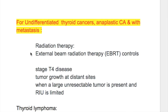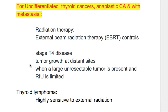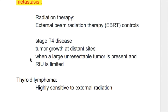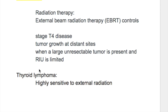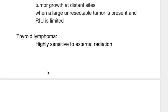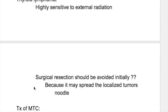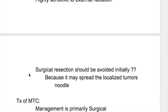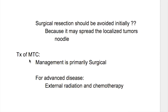For undifferentiated thyroid cancers, anaplastic cancers, and those with metastasis, external beam radiation therapy (EBRT) is used for stage 4 disease, tumor growth with distant metastasis, large unresectable tumors, and when radioiodine uptake is limited. Thyroid lymphoma is highly sensitive to external radiation; surgical resection should be avoided initially as it may spread the localized tumor. Treatment for medullary thyroid carcinoma is primarily surgical; for advanced cases, external radiation and chemotherapy are used.